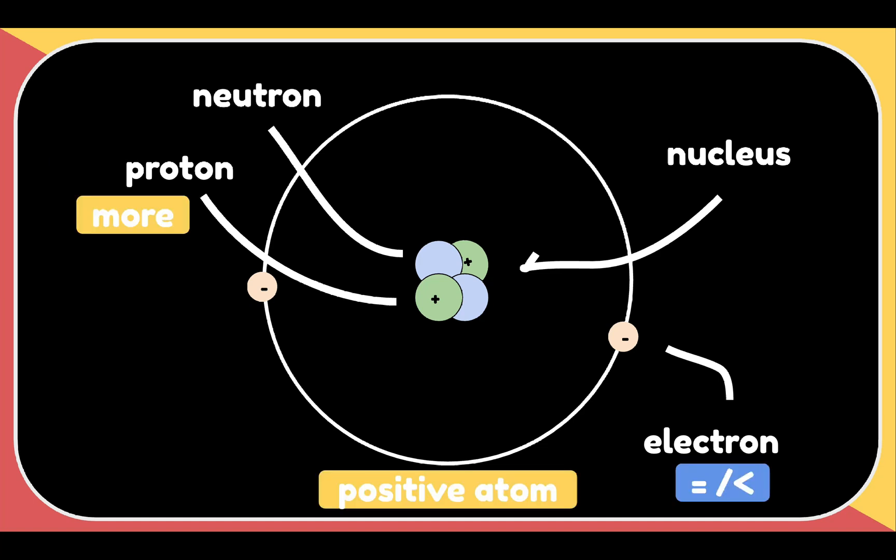Then we have a positive atom, or an atom with a positive charge. A positive atom will have more protons than electrons. Do not be confused with the equal sign and the less than sign. It just means that this positive atom may have the same number of electrons as the neutral atom, but the number of protons increased, or it could mean that the number of protons is the same, but the number of electrons lessened.